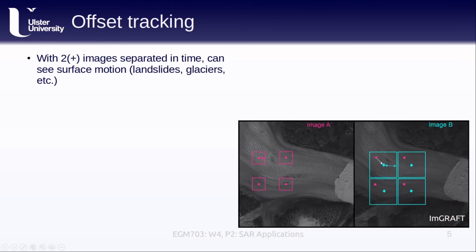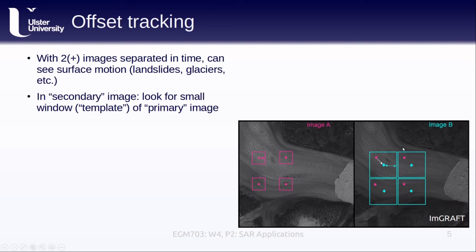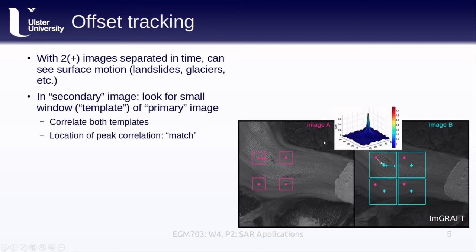If we have two or more images separated in time, then we can observe slow surface motion — for example, the flow of landslides or of glaciers. The basic idea of offset tracking is as follows. First, we start with a small sub-region, also known as a template or chip, of the first image, and starting from that same location in the second image, we search for our reference template by moving it around the second image and calculating the correlation between the sample chips. The peak correlation generally corresponds to the surface displacement between the two images.